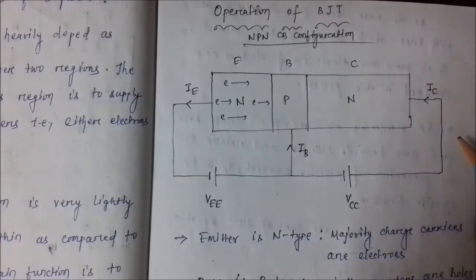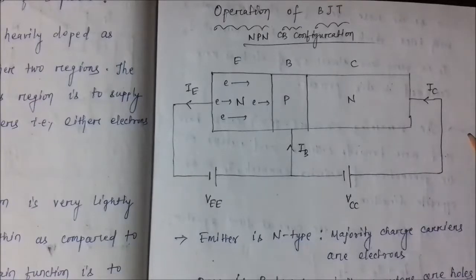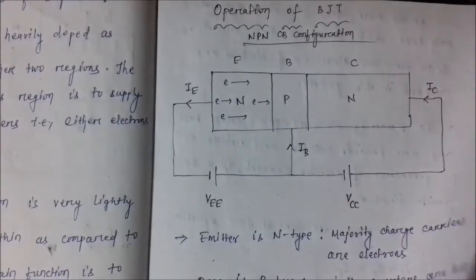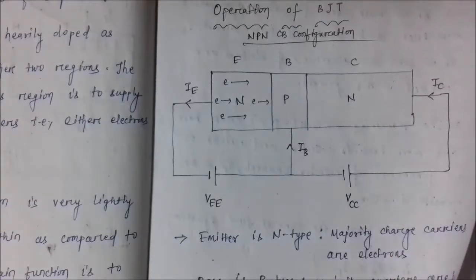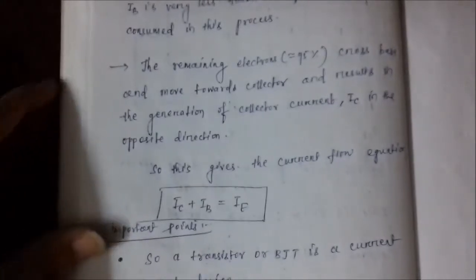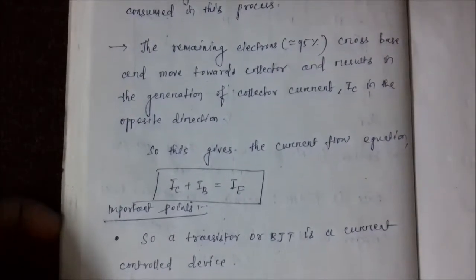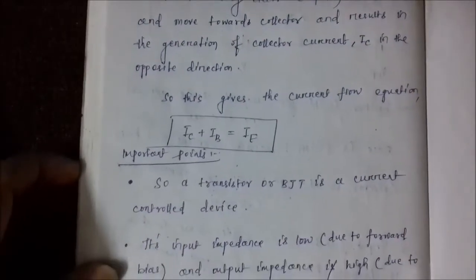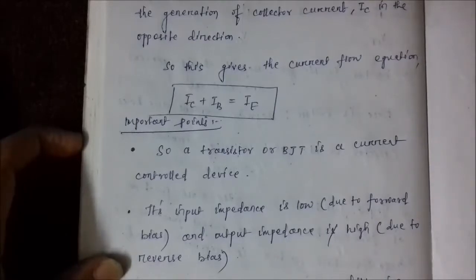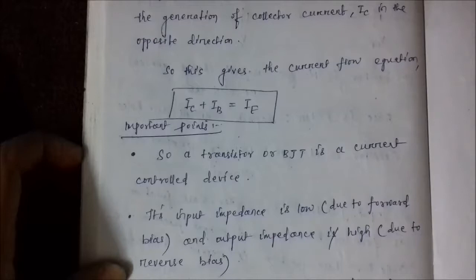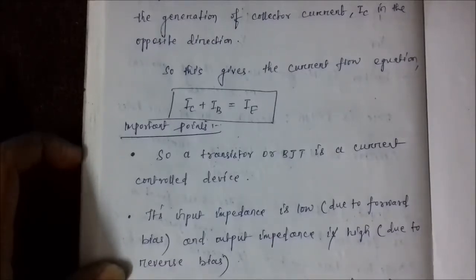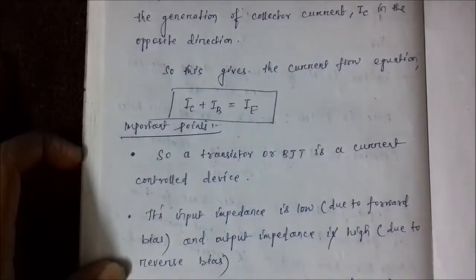In PNP transistors, electric current flows due to the migration of holes, whereas in NPN the electric current flows due to movement of electrons. This is the general operation of NPN common base configuration BJT. Similarly, you can apply the same process for common emitter and common collector configurations. An important point is that BJT is a current control device — almost all parameters of BJT can be regulated by controlling the collector, base, and emitter currents. Every other aspect of BJT depends on these three values.